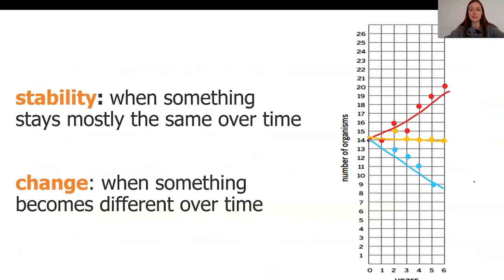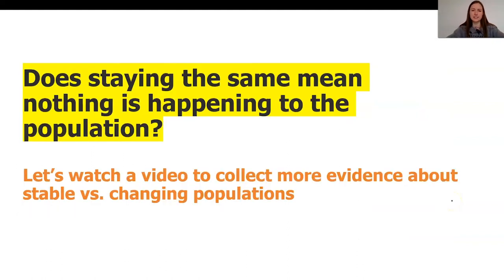This is interesting. When populations stay the same over time, we say they have stability. Stability can be used for anything that stays mostly the same over time, shown here in our yellow line where we have pretty much the same number of organisms over time. Change occurs when something becomes different — we definitely see that in the red and blue lines. Does staying the same mean nothing is happening? Births and deaths are always occurring, so how can a population stay the same? Let's watch a video to collect more evidence about stable versus changing populations.